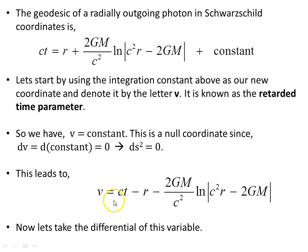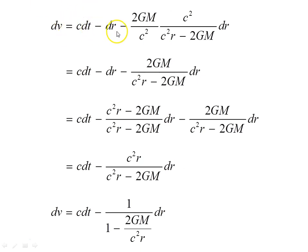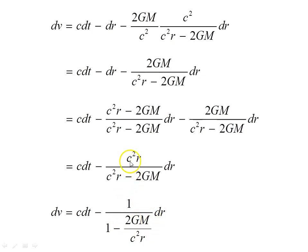This leads to the expression for V. We rearrange and take the differential dV of both sides, giving dV equals c dt minus dr minus this constant times the logarithmic term. Simplifying with a common denominator, numerator terms cancel, and after factoring out c squared and r, we arrive at dV equals c dt minus this more recognizable form. So c dt equals dV plus this object, and we then compute c squared dt squared.